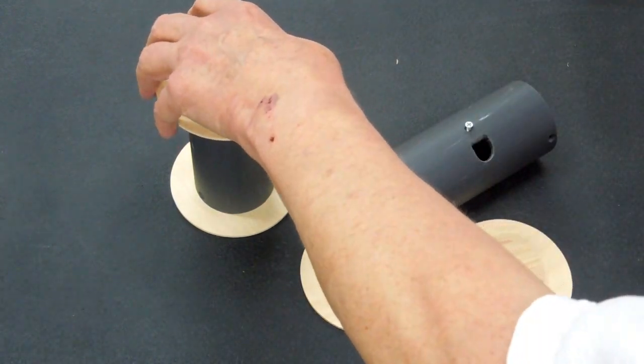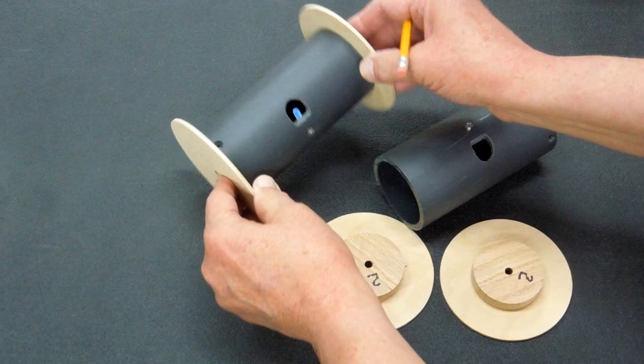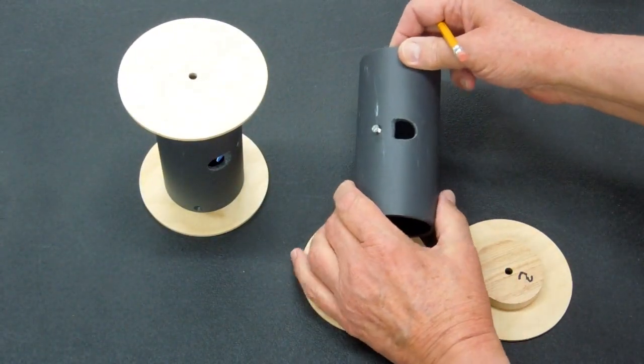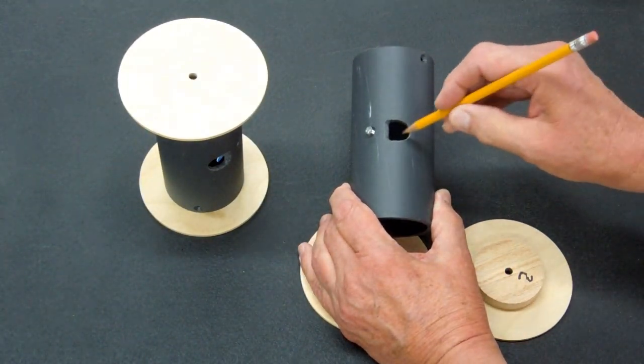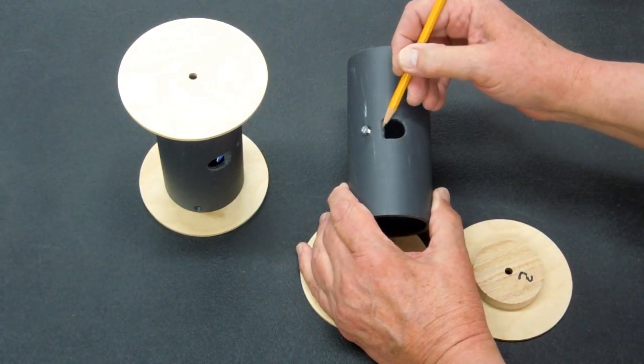Now we need to complete this take-up spool. When it's completed, it will look pretty much like this. I drilled a 5/8 hole with a Forstner bit, squared that out, rounded this a little bit here.